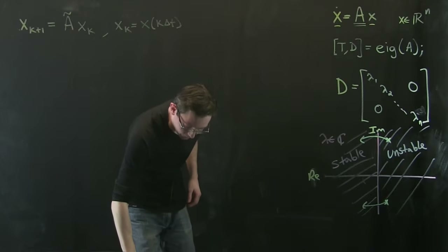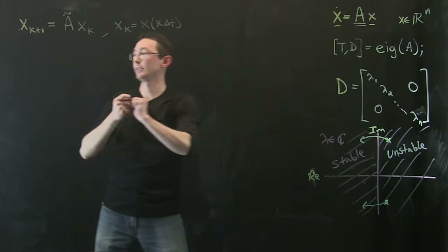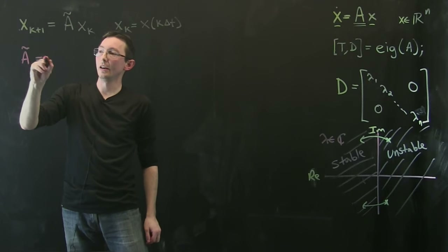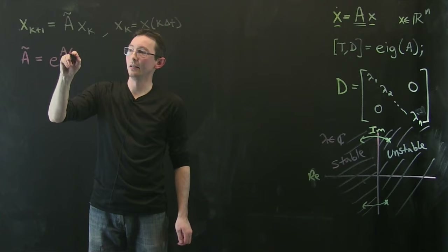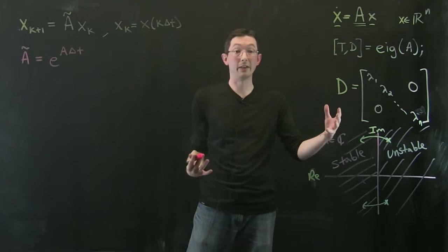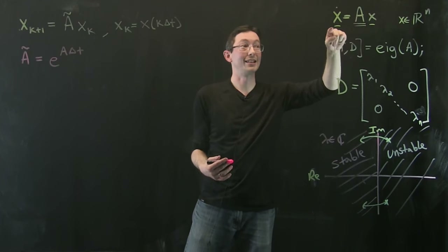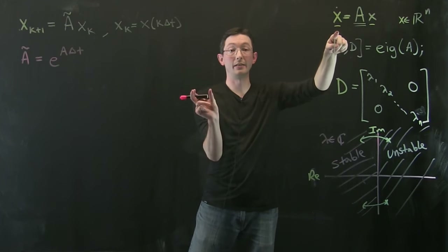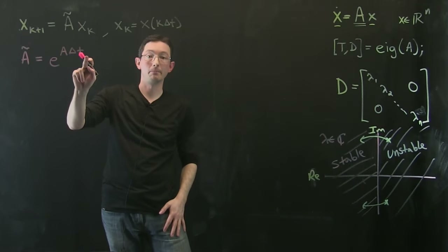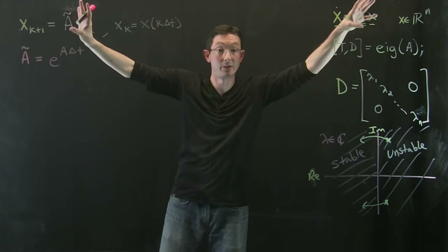It's also nice to write what Ã is in terms of A. Ã is simply e^(A·Δt). We just derived that if we have some dynamics and want to know the state at the next Δt in the future, we just map by e^(A·Δt). These two matrices are intimately related by the matrix exponential.